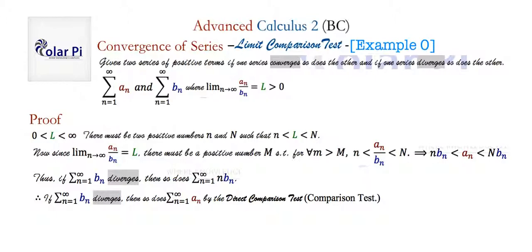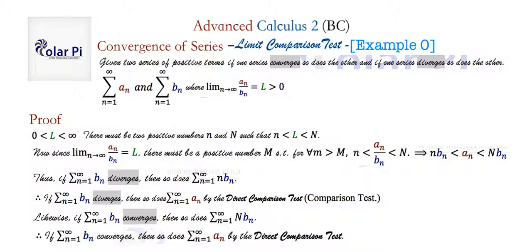And you can probably guess what we're going to do next, which is say that if a series made of capital N times b sub n converges, then a series made of a sub n will also converge. And of course, if a series made of b sub n converges, then so will a series made of capital N times b sub n. And so, as we want, if a series made of b sub n converges, then so will a series made of a sub n.